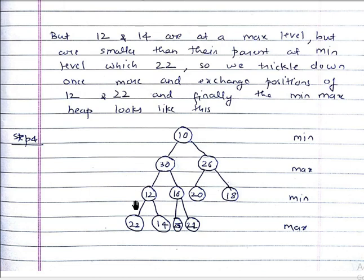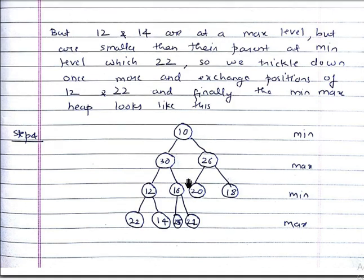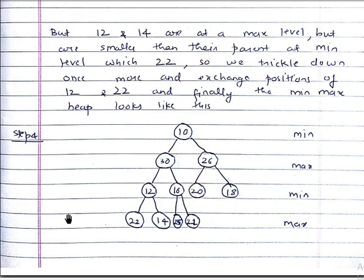We replace 12 with 22 and 22 with 12. Now we check if the final min-max heap is correct. At the root we have 10, which is the smallest number — yes. At max level, 30 and 26 are bigger than 10 — yes. At min level, 12 and 16 are smaller than 30, and 20 and 18 are smaller than 26 — yes. At max level, 22 and 14 are bigger than 12, and 25 and 21 are bigger than 16 — yes. This is a proper min-max heap, with root element 10 after deletion of the minimum element, which was 5.